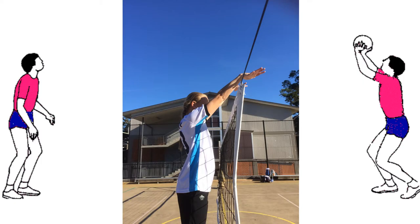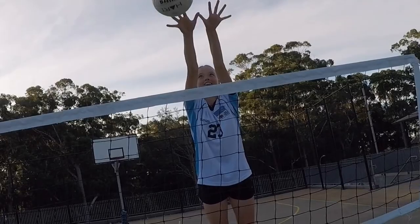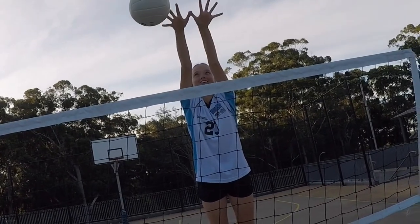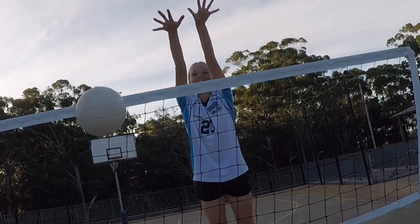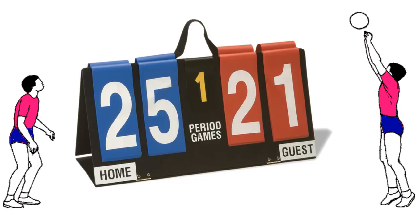When blocking, your arms must be at 120 degrees, meaning that your hands will be reaching over the net and will shut down the ball. This angle will ensure a successful block. The referee's whistle blows. With that final block, the game is over. The match has been won thanks to the players' knowledge of how the Pythagorean theorem and angles are used in a game of volleyball.